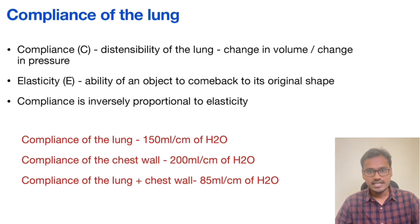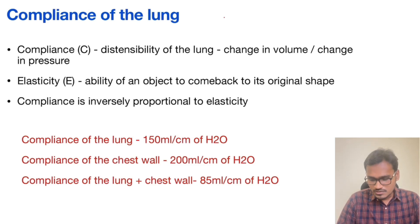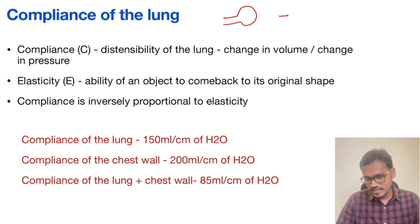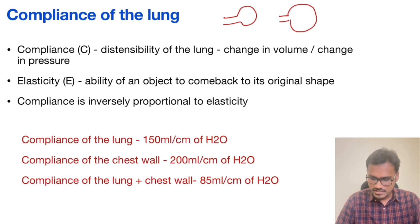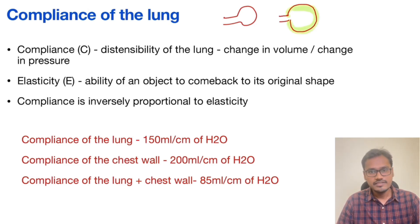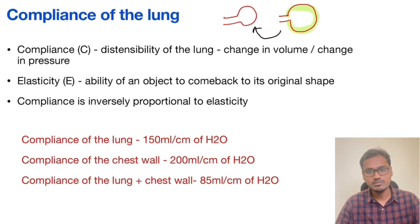Now let's see this example applied to lungs. If you have a balloon and try to blow through it, it expands or distends in size — this distension is called compliance. Once you release the air, it recoils back to its original shape, and this recoiling back is called elasticity.